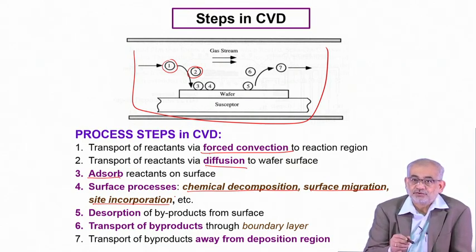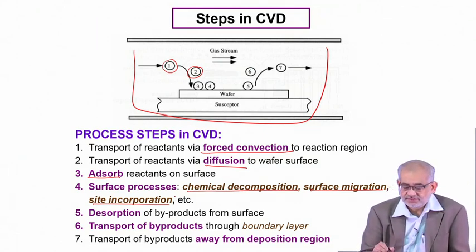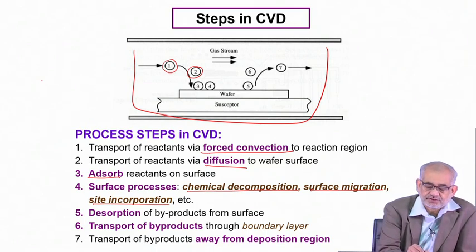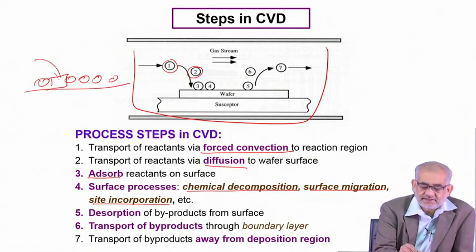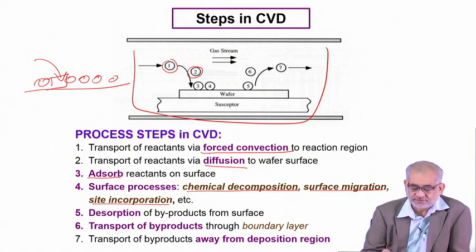Surface migration and site incorporation mean that surfaces are known to have a high density of defects, typically point defects like vacancies. If you have more vacancy density or free volume on the surface, those are the regions where individual atoms can easily come and incorporate. If there is a vacancy, an individual atom coming there will find it easier to get incorporated onto the surface — that is site incorporation. We also see site saturation through this process.